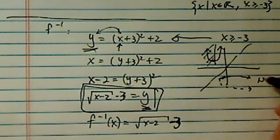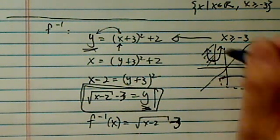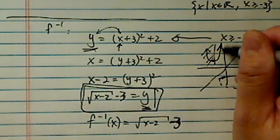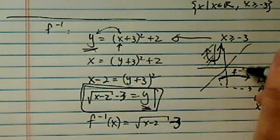Okay, this is no longer a function unless we restricted x was bigger than three. We have to have only a single branch of the curve for this to be a function and for the inverse to be a function.